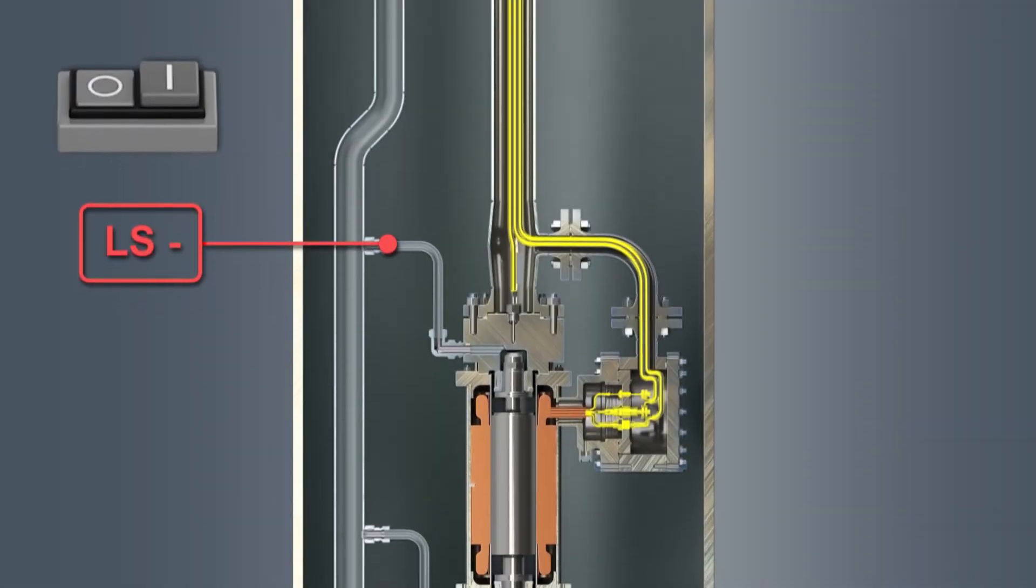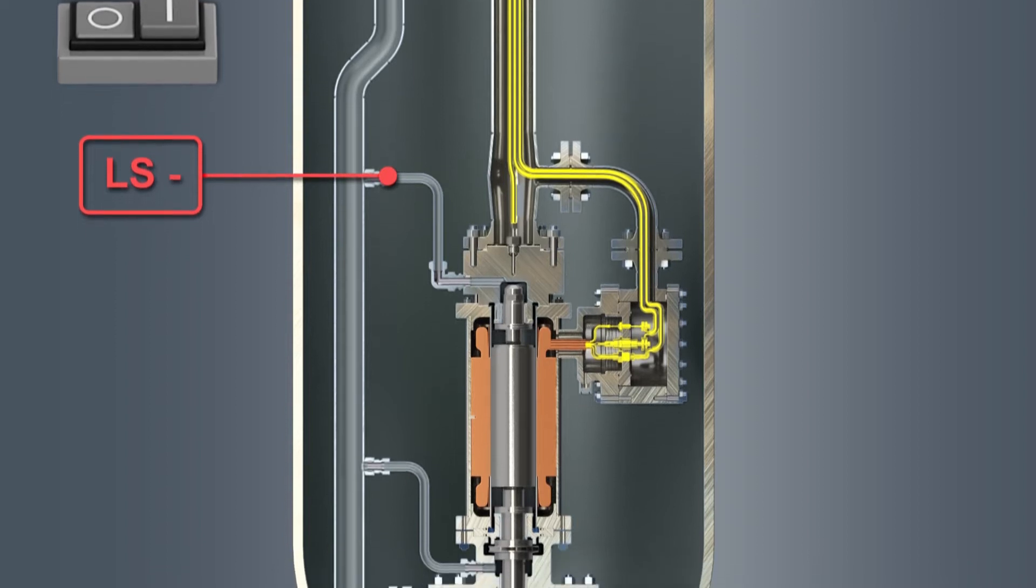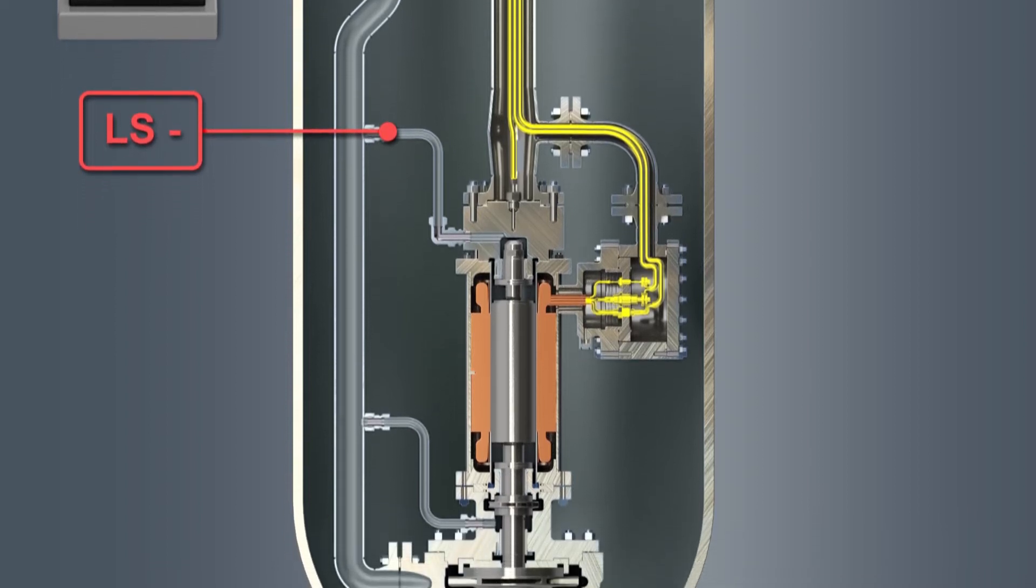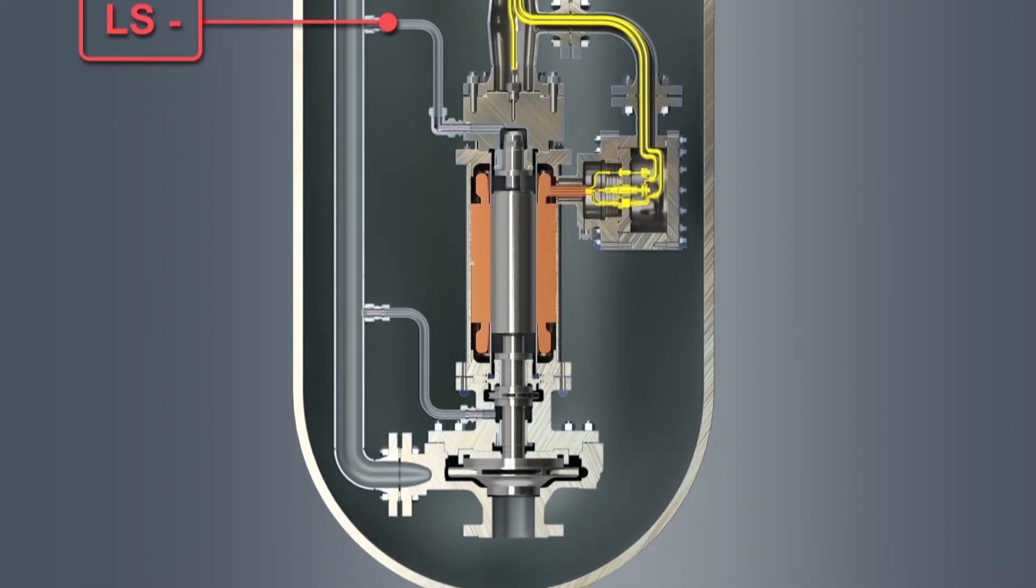For special applications, canned motor pumps from Hermetic can be installed in tanks or vessels as so-called submersible pumps. Depending on the required pumping parameters, single-stage or multi-stage canned motor pumps are used here.